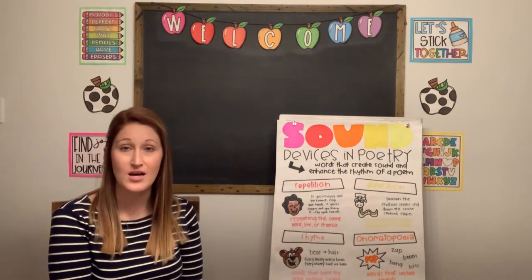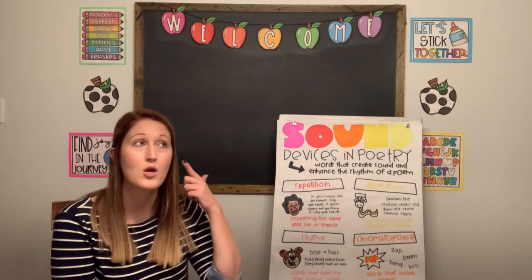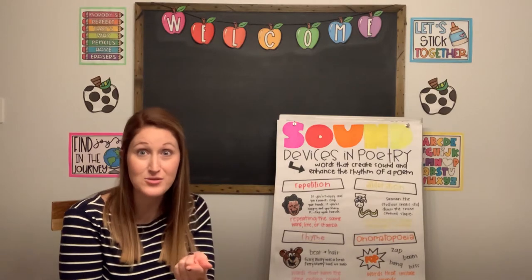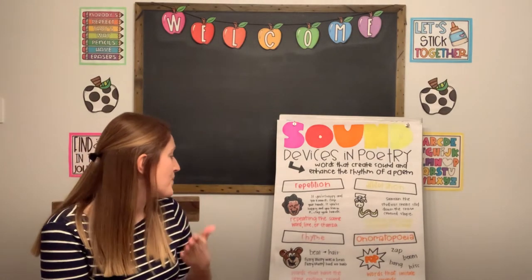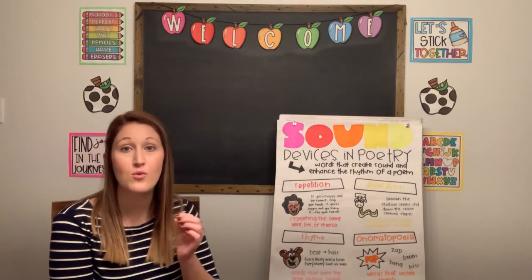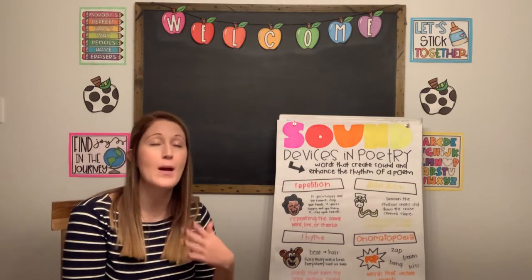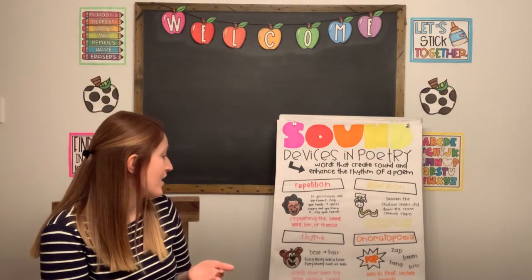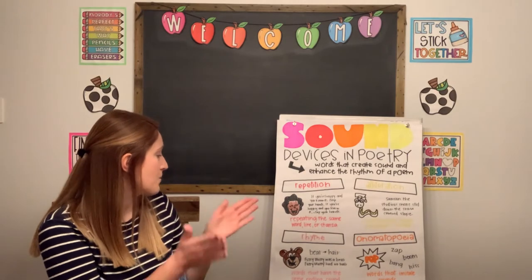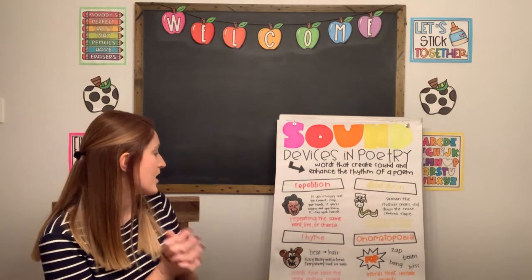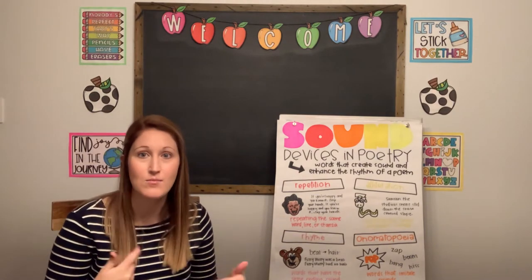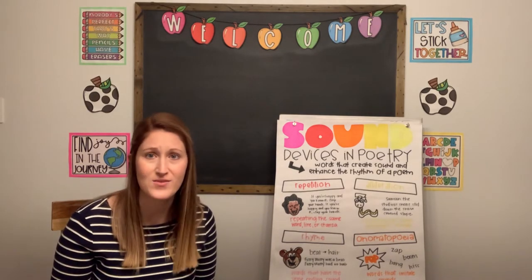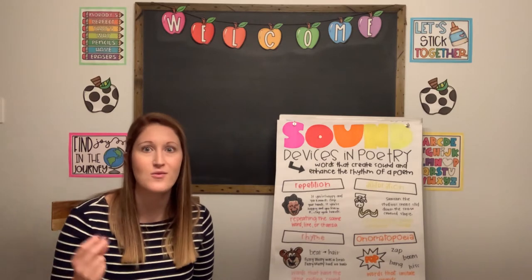The first sound device we're going to talk about is repetition. When you hear that word, you can hear the word 'repeat' in it. Repetition is when you repeat the same word, line, or stanza. An example would be: 'If you're happy and you know it, clap your hands, if you're happy and you know it, clap your hands.' We're repeating the same line — that's repetition building up a repeating sound.